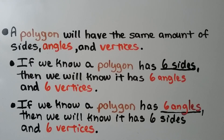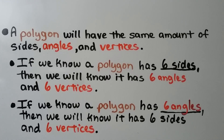A polygon will have the same number of sides, angles, and vertices. If we know a polygon has six sides, then we know it has six angles and six vertices. And if a polygon has six angles, then we know it has six sides and six vertices. The number of its sides will be the same as the number of its angles and vertices.